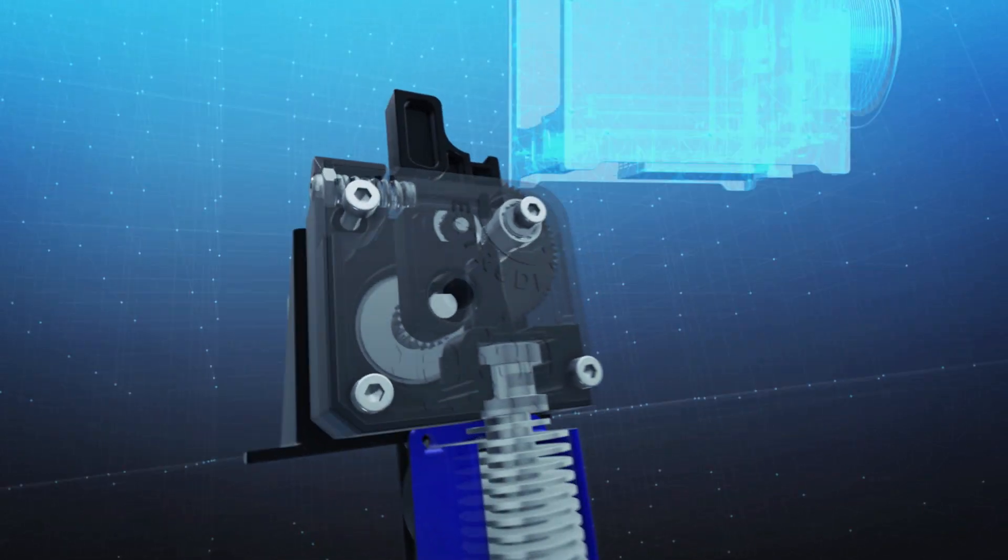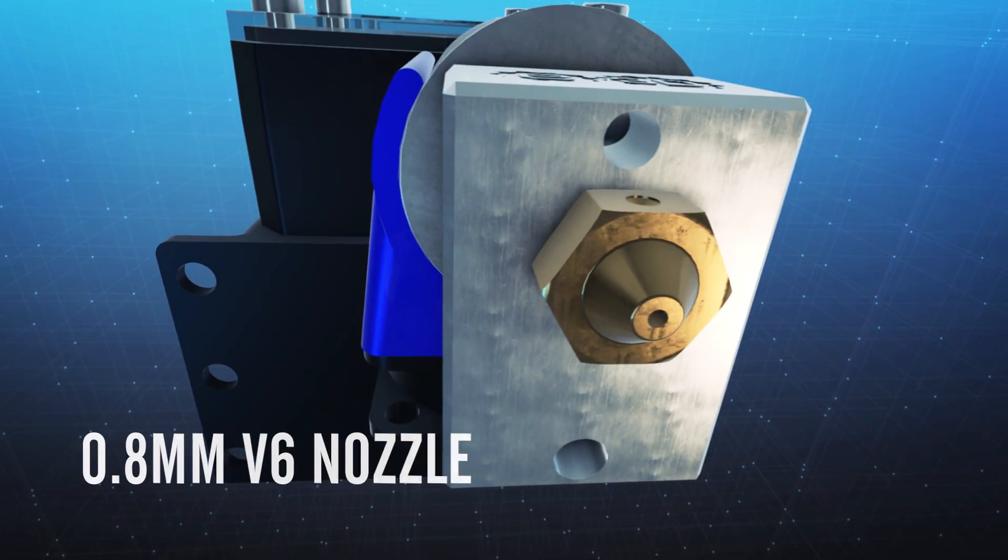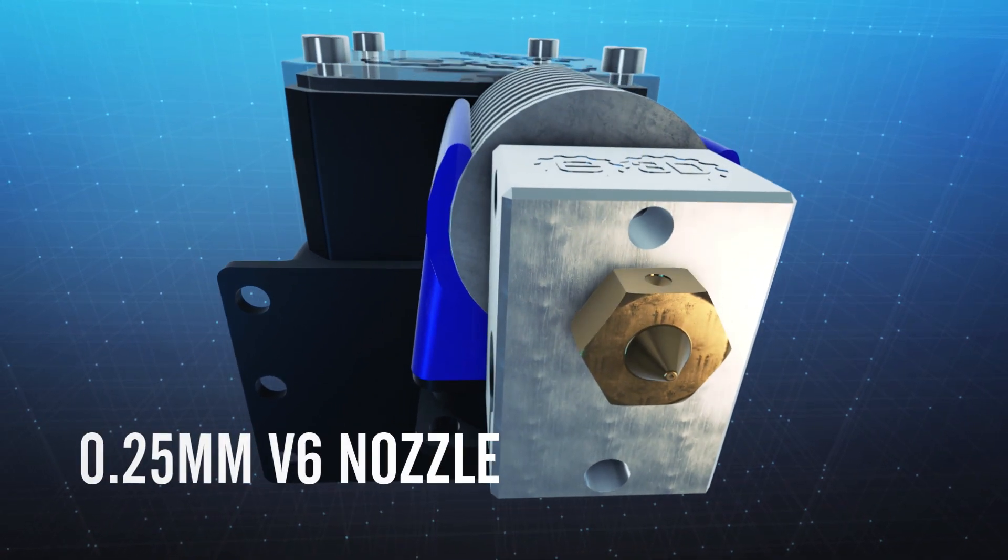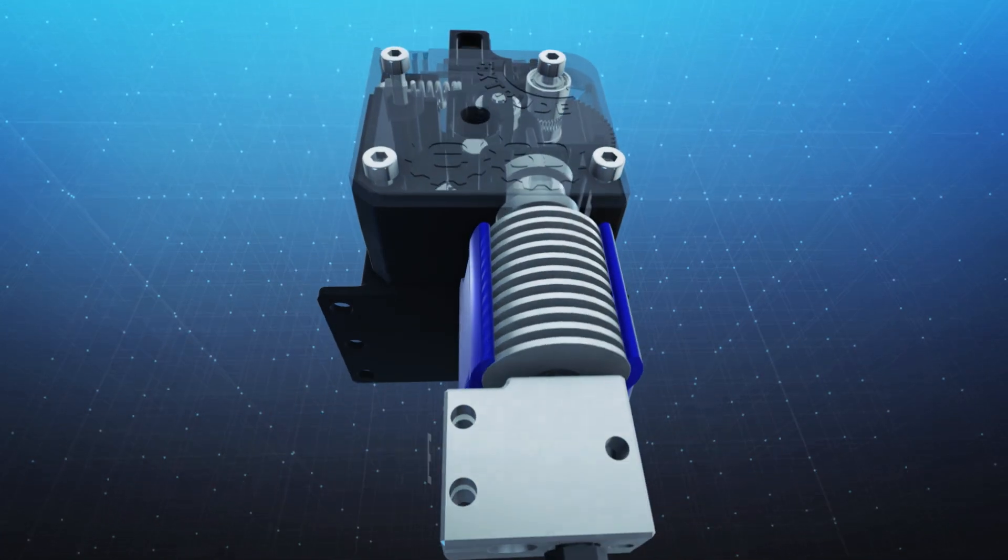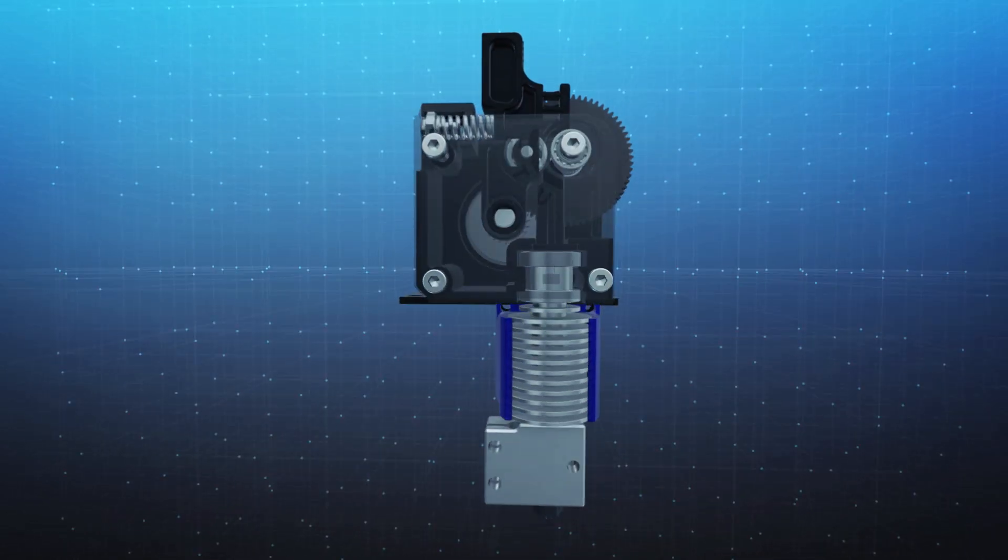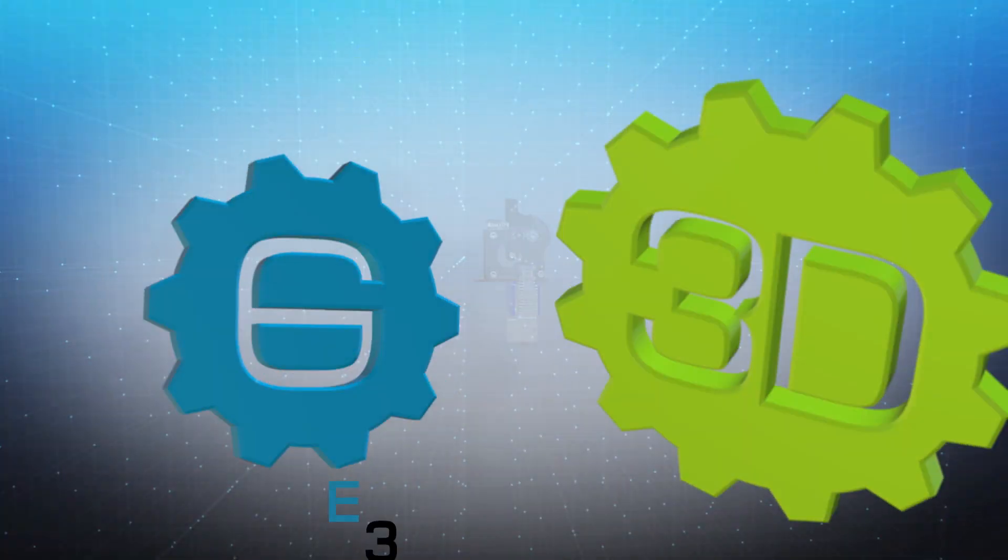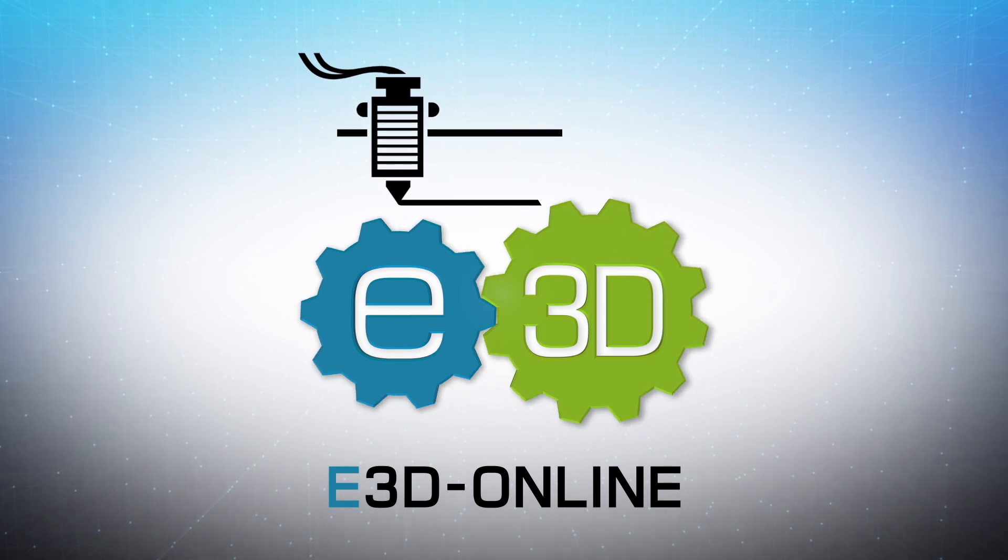Give your printer the capability to handle all types of extrusion, from high definition prints with tiny nozzles to high flow rate printing with E3D's Volcano. This little guy gives your printer titanic strength. Available to buy now.